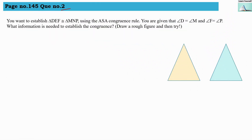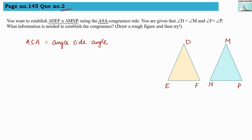Question number 2: You want to establish that triangle DEF is congruent to triangle MNP using the ASA congruence rule. ASA stands for Angle-Side-Angle, where two angles are present and the side is included between those two angles.